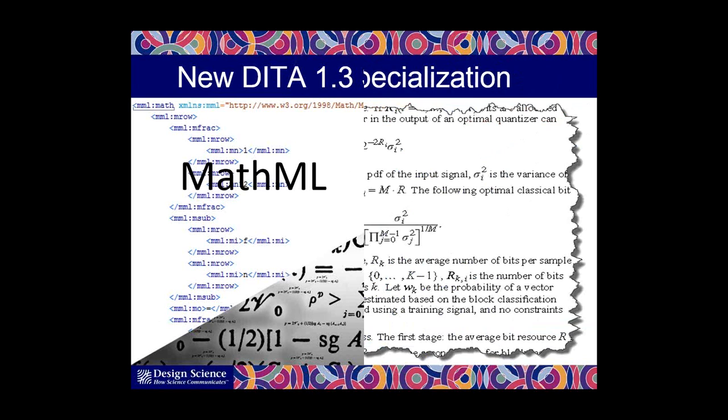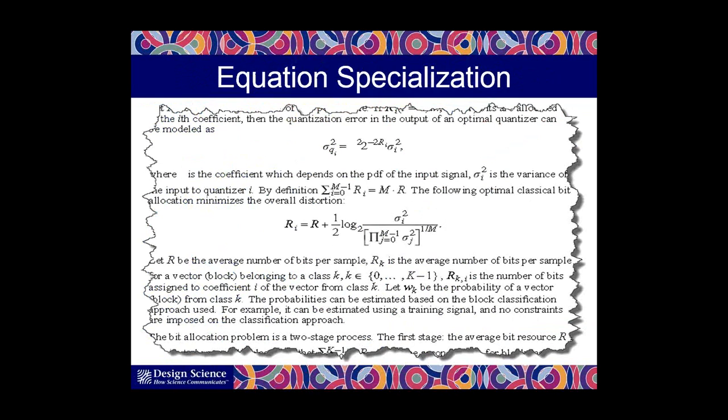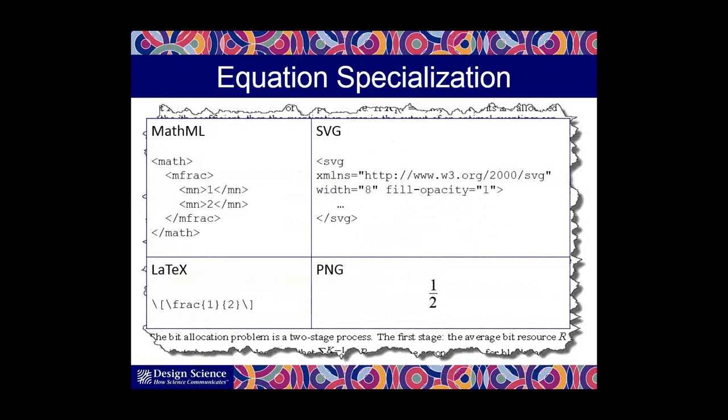I will be talking about our equation specialization. This is one of the two new Math specializations in DITA 1.3. The equation specialization provides information on how the equation should be placed or formatted within your document. For example, should the equation be set off from the rest of the text or in line with the rest of the text? Should it have equation numbers or should it have captions and so on? The equation specialization is format agnostic, which means that your equations can be represented as MathML, as SVG, as TeX or LaTeX string, or as a bitmap image such as a PNG.